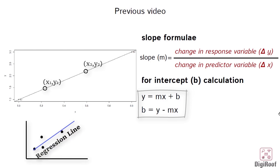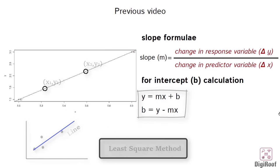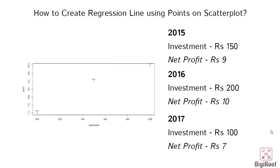So using these random points, we need some ways to make a regression line. This method to make a straight line using the random points on the scatter plot is known as the least square method. Let's go back to the example where we made a scatter plot for investment and profit for the year 2015, 2016 and 2017.